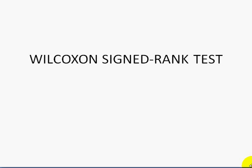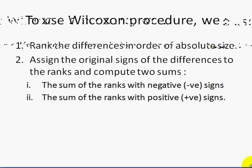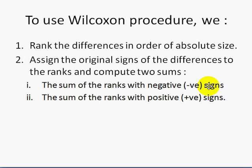Our learning outcome for today is to test hypotheses using the Wilcoxon Signed Rank Test. To use the Wilcoxon procedure, we first rank the differences in order of absolute size. Second, we assign the original sign of the differences to the ranks and compute two sums: first, the sum of the ranks with negative signs, and second, the sum of the ranks with positive signs.